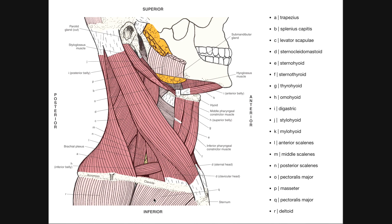For the scalenes, we can see those really well from the lateral view. L is the anterior scalene right here. M, posterior to that, is the middle scalene, and N is the posterior scalene. There's a little space here called the interscalene space — between the anterior and middle scalenes. The brachial plexus will actually come through that space, and we can also see the subclavian artery. The subclavian vein does not go through this space — only the artery.